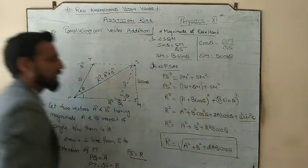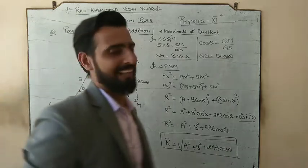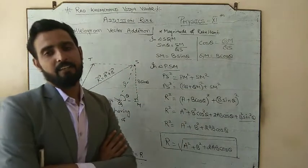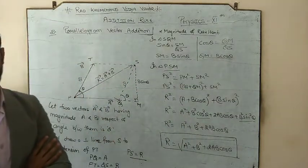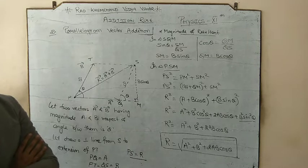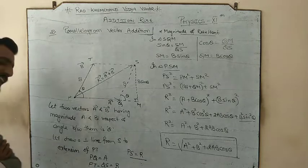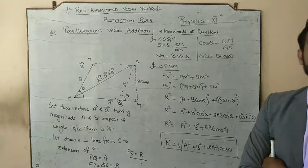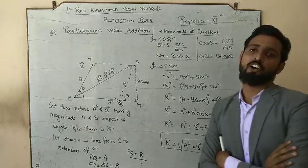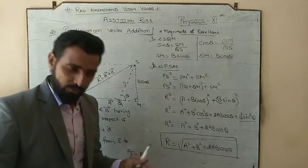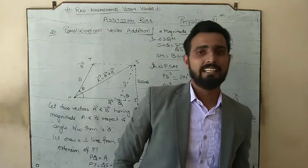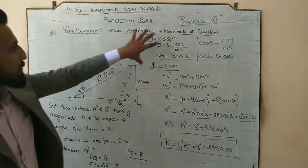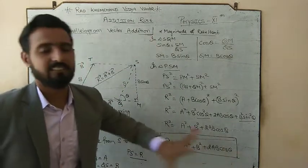The conclusion is: whether it is triangle vector addition or parallelogram vector addition, the magnitude of the resultant has the same formula. The technique is different — in one they are connected head to tail, and in the other they are connected head to head or tail to tail.